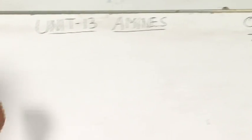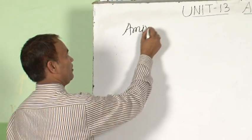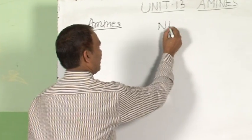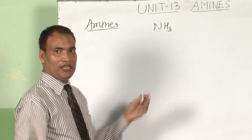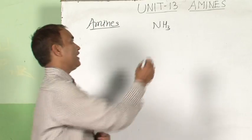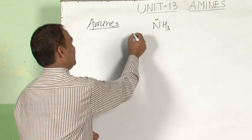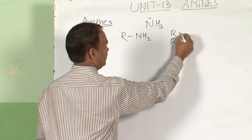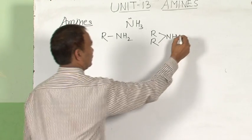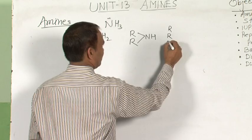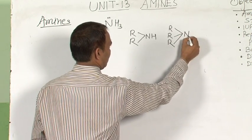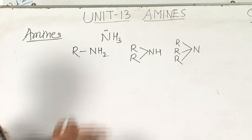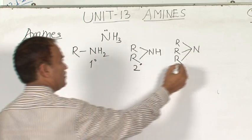First, let us know what are amines. Amines are the derivatives of ammonia in which one, two, or all three hydrogen atoms are replaced by alkyl groups. If one hydrogen is replaced: RNH₂; if two hydrogens are replaced: RNH; if all three hydrogen atoms are replaced by alkyl groups: RN. This one is known as primary amine, this is secondary amine, and this is tertiary amine.